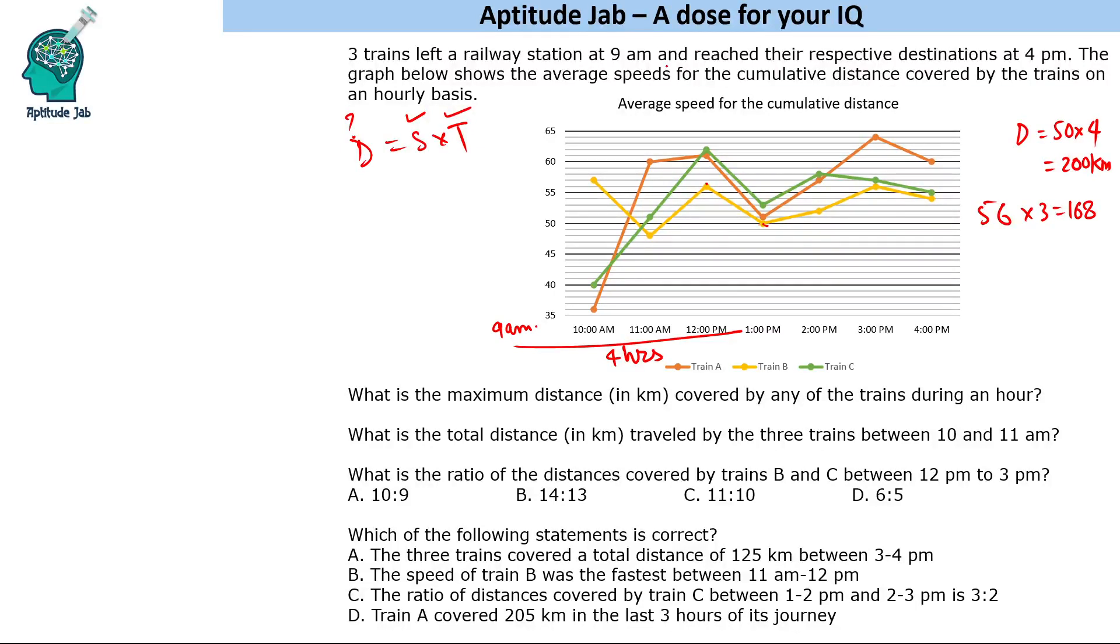The first question is: what is the maximum distance in kilometers traveled by any of the trains during an hour? Now the obvious thing a person might do is solve by table - you find for each train hour by hour distance. That will obviously work for all questions, but that's time consuming. You have to be smart in solving these questions without creating the table.